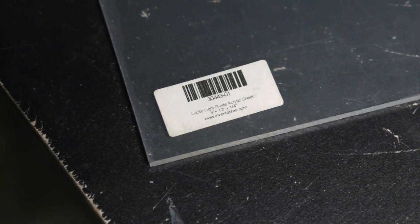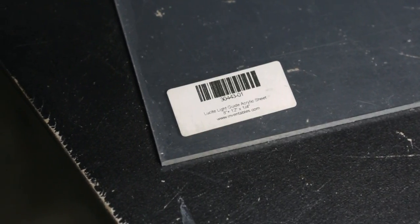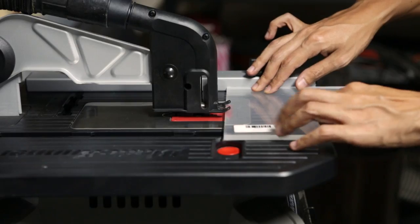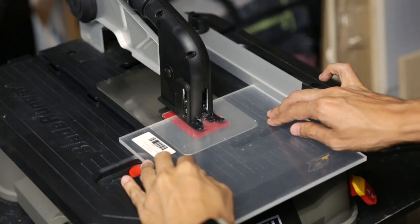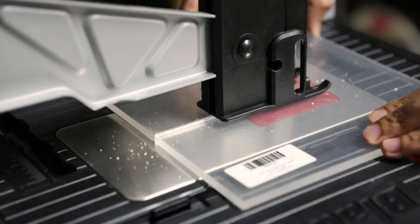Lucite is a light guiding acrylic that features light diffusing particles. This is great for edge-lit engraving because it provides even illumination. This 8x12 inch acrylic sheet is a quarter inch thick, but you can get them in different sizes.